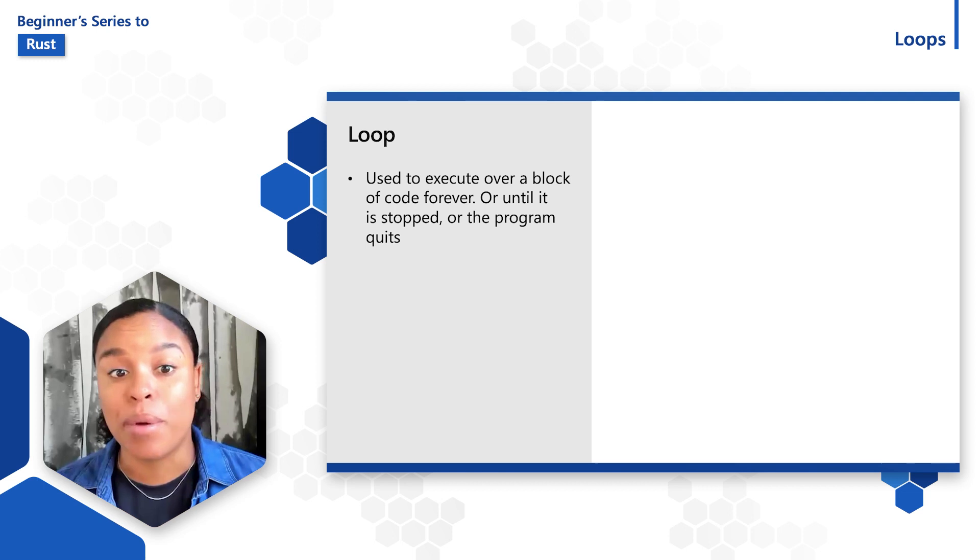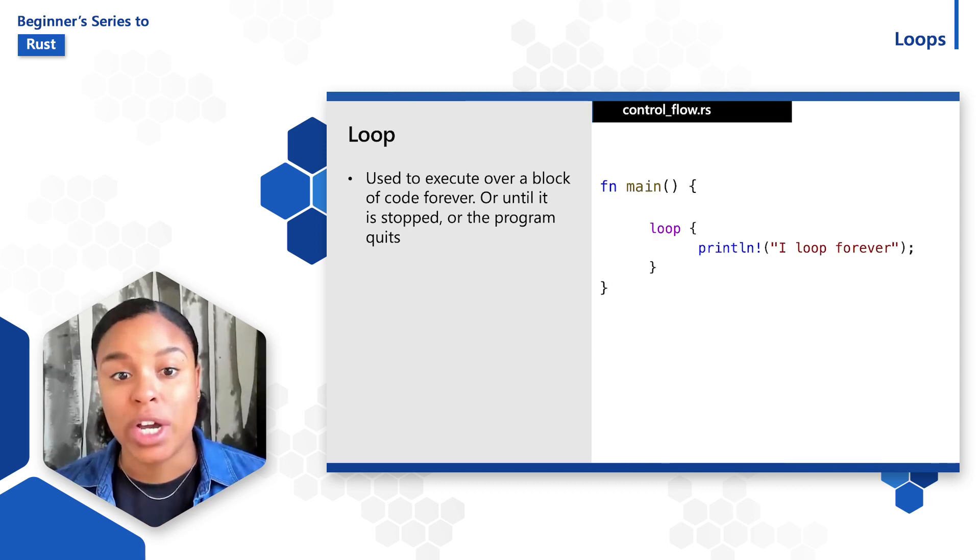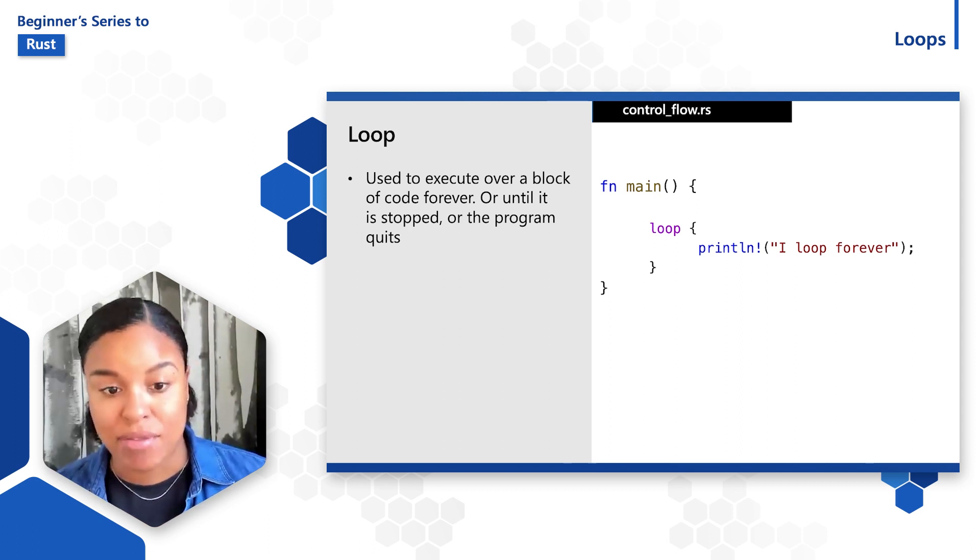First up, I'll focus on a loop. The loop keyword in Rust is used to execute over a block of code forever until it is stopped or the program quits. Let's take a look at the most basic implementation of a loop. Here in the code example,